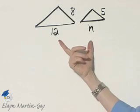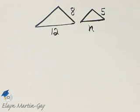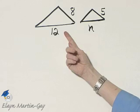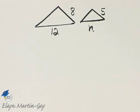We are now given these two similar triangles, and we'd like to find this unknown side N. Remember what similar triangles means in geometry? It means that they're the same shape, but not necessarily the same size.